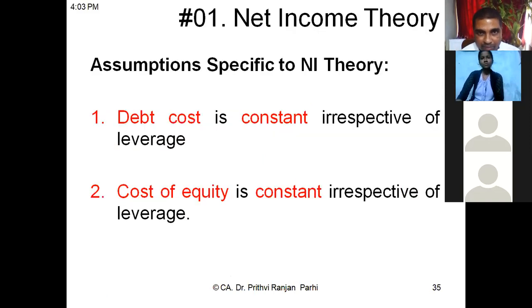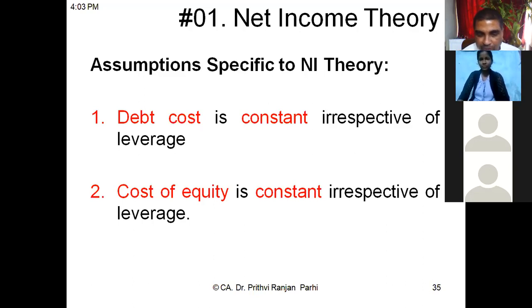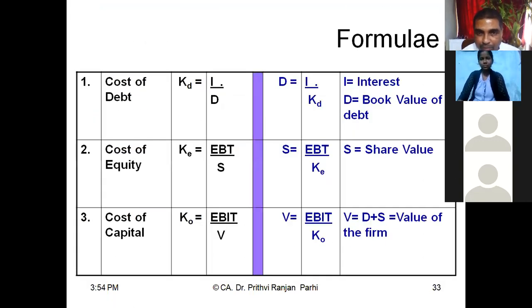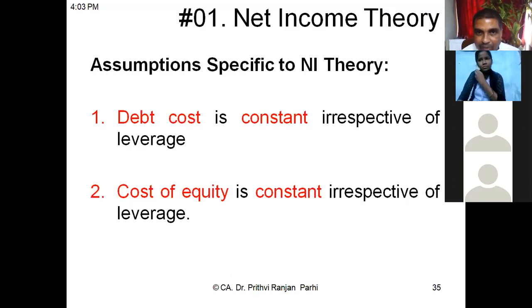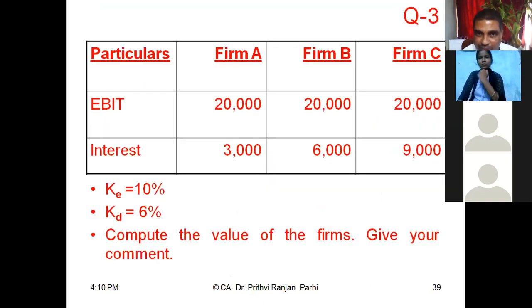We'll now start the first theory — the Net Income Approach — but we may not be able to complete it today. In the next class, I'll explain the specific assumptions of this theory and then solve a question. Next class is tomorrow at 3:30. First we'll go through these formulas again, then move to the Net Income Approach, and then to the next theory. Go through the formulas, try to understand them, and come prepared tomorrow. Thank you very much — let's catch up tomorrow.